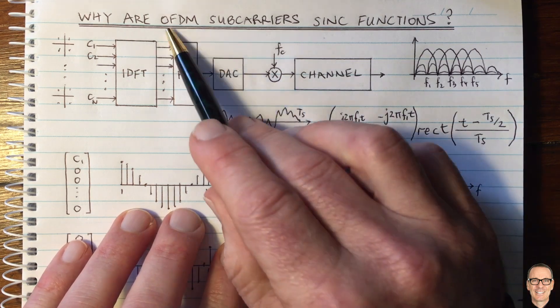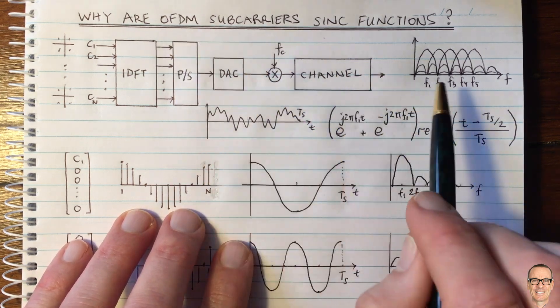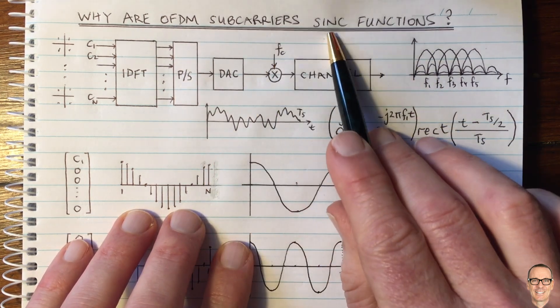So hopefully this has given you more insights into OFDM, and in particular, why these subcarriers are sinc functions.